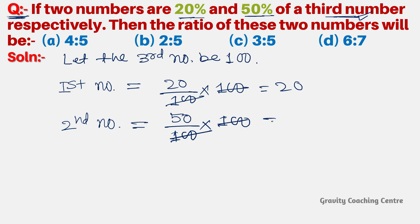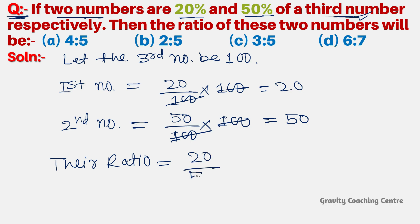The second number is 50% of 100, which is 50. Now we find the ratio of both numbers: their ratio equals 20 by 50, which simplifies to 2 is to 5.